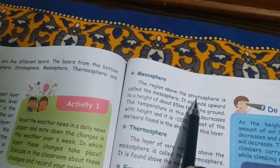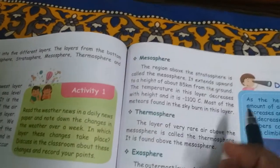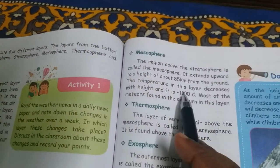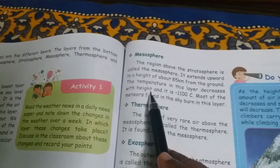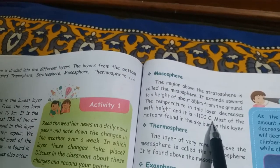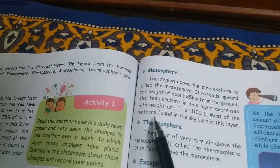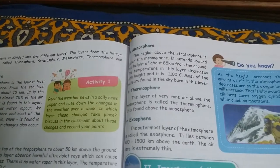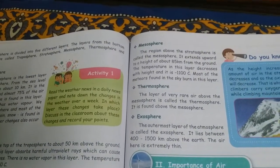The next layer is the mesosphere. The region above the stratosphere is called the mesosphere. It extends upwards to a height of 85 km from the ground. The temperature in this layer decreases with height and can reach around minus 110 degrees Celsius. Most of the meteors found in the sky burn up in this layer.